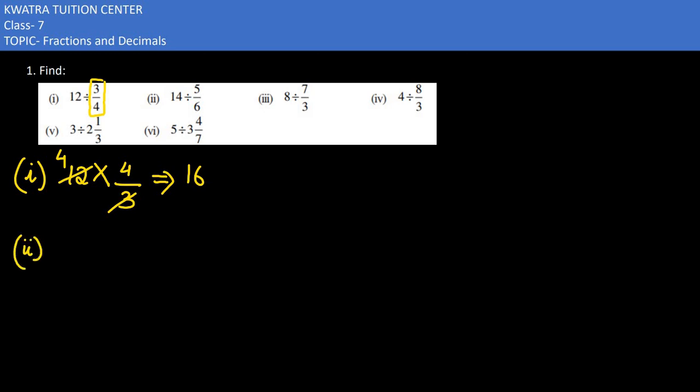Now let's have a look at the second one. 14 is divided by 5 by 6. How will we do this? Multiplication. You will write it as 6 by 5. In this case, 14 into 6 would be there. 14 into 6 divided by 5. You will get 84 divided by 5.